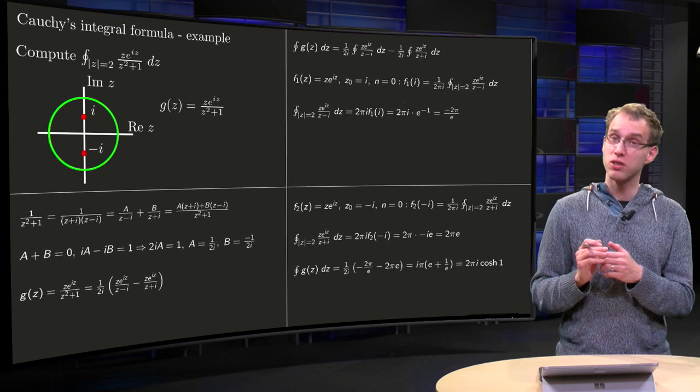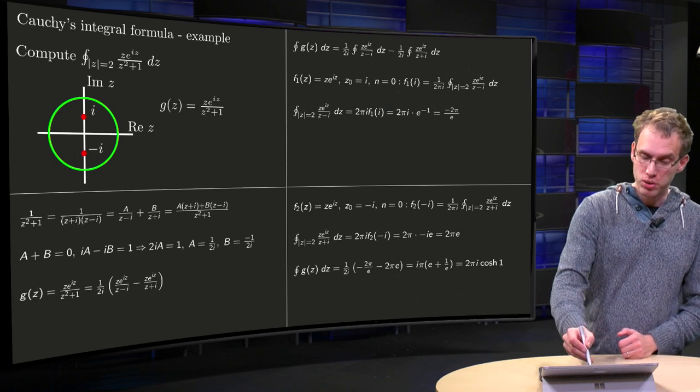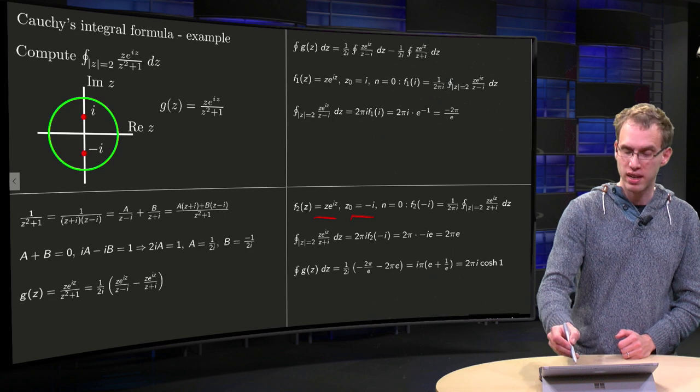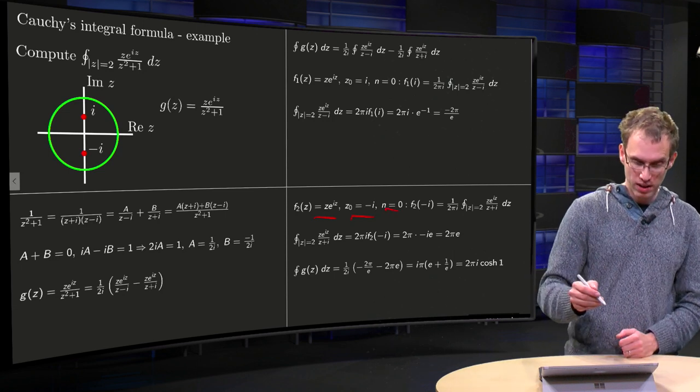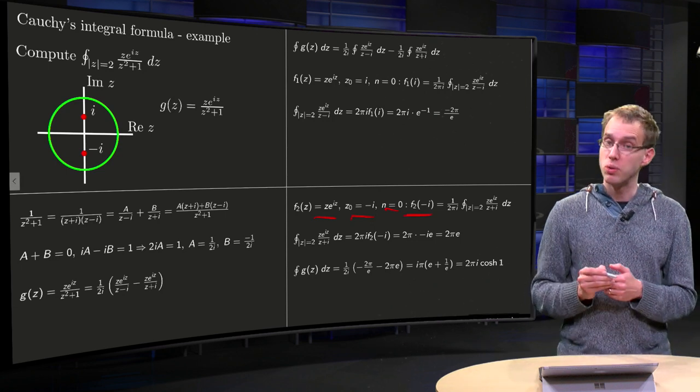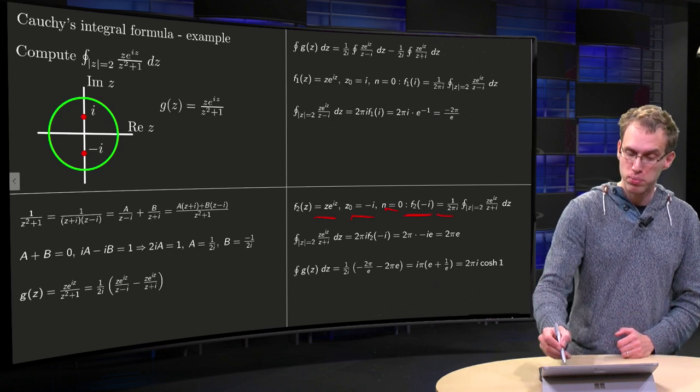Then, second integral, same strategy. We choose as our f₂ z·e^(iz), z₀ equals minus i, and again n equals zero. Plug everything in into Cauchy's integral formula, then you get f₂ at minus i equals 1 over 2^i.